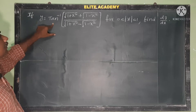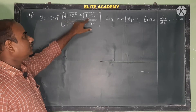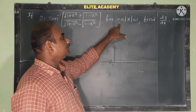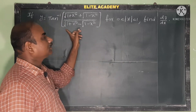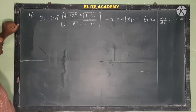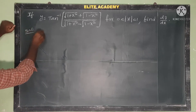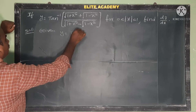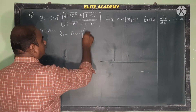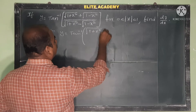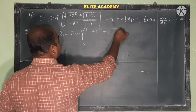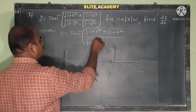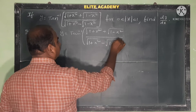If y is equal to tan inverse of [root of (1 plus x square) plus root of (1 minus x square)] divided by [root of (1 plus x square) minus root of (1 minus x square)], for 0 less than mod x less than 1, this is the function given and we have to find dy by dx.